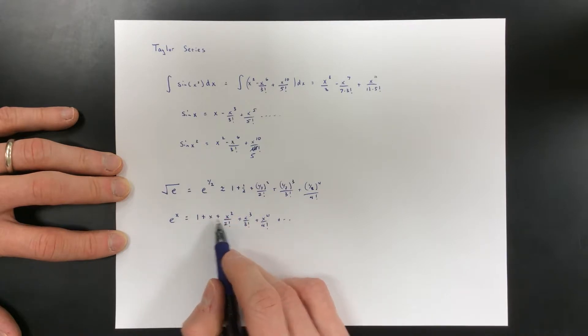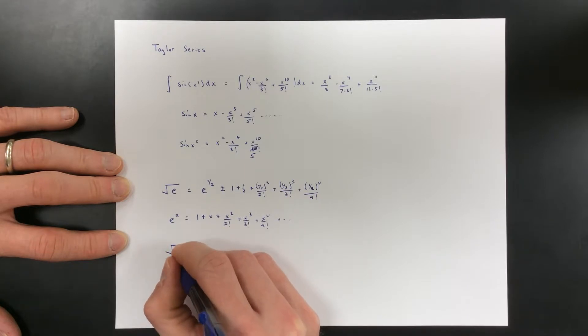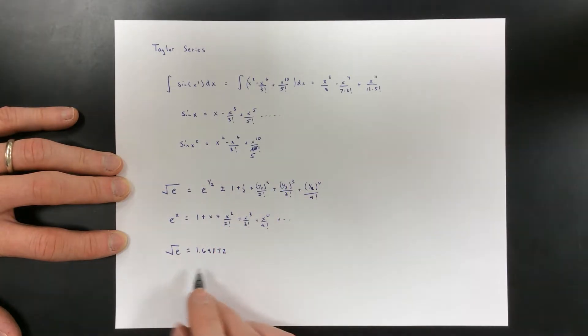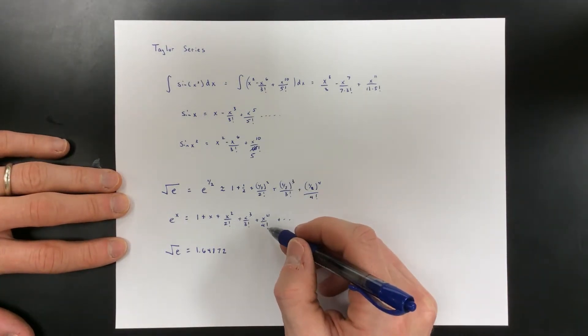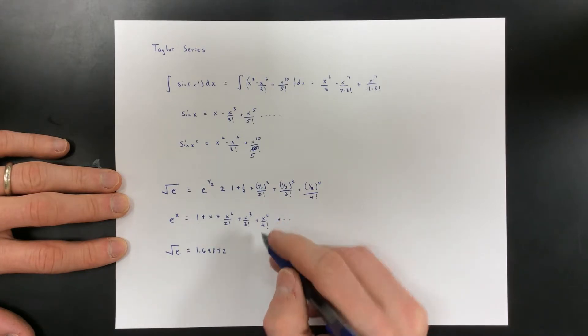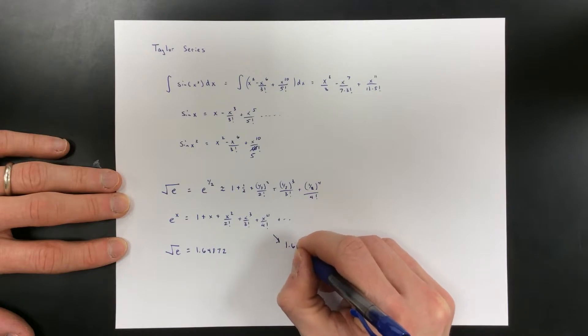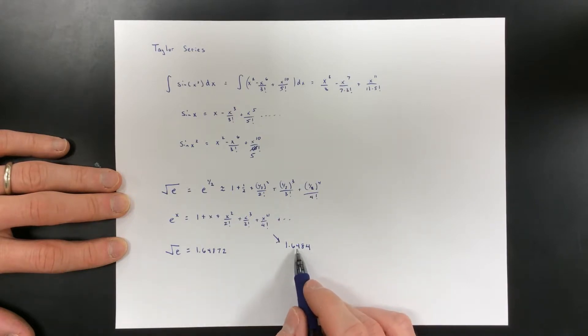If you type this out on the calculator, your calculator will tell you that the square root of e is 1.64872, and that's your calculator's estimation for what the square root of e is. And if we use the fourth order, which would be the first five terms, this polynomial approximation will give us 1.6484.